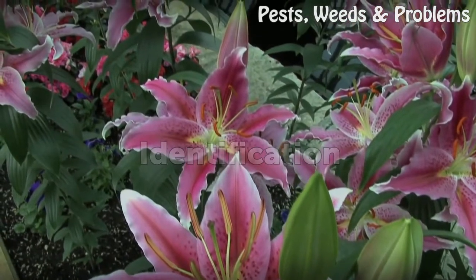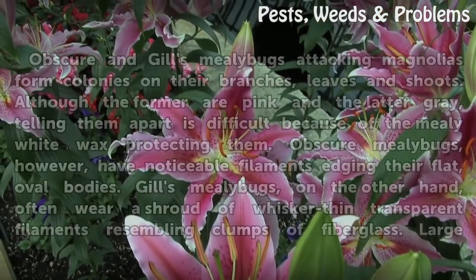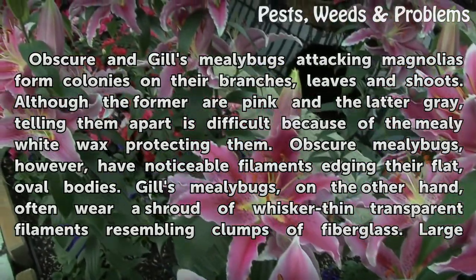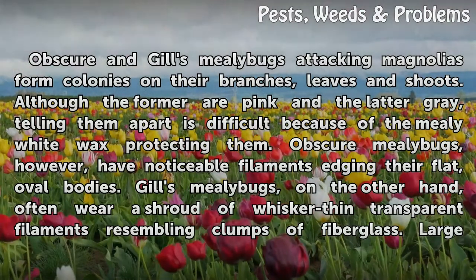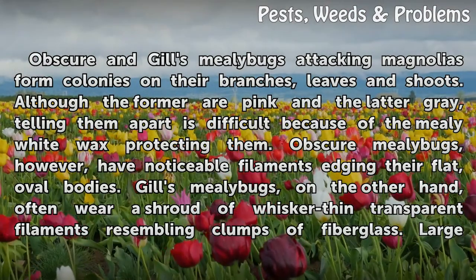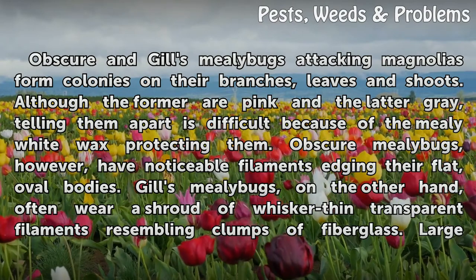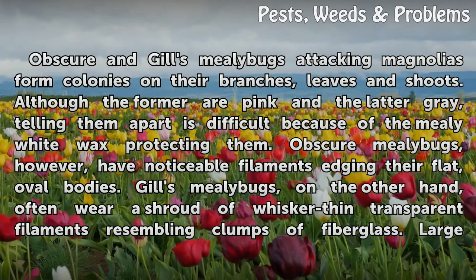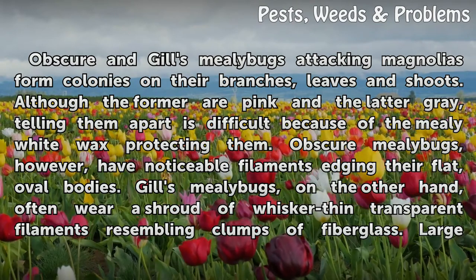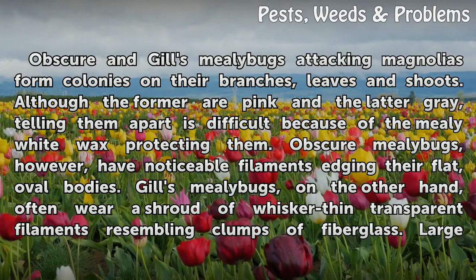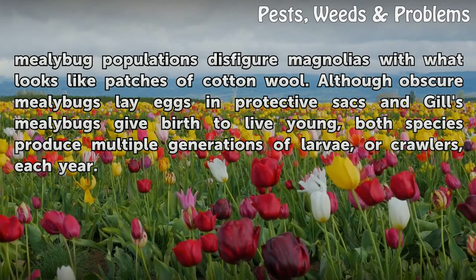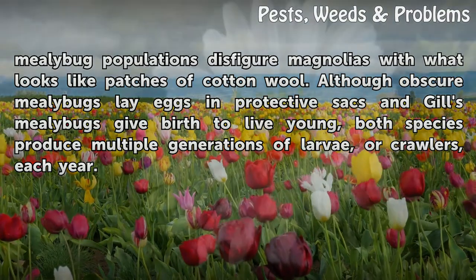Identification. Obscure and Gill's mealy bugs attacking magnolias form colonies on their branches, leaves and shoots. Although the former are pink and the latter gray, telling them apart is difficult because of the mealy white wax protecting them. Obscure mealy bugs, however, have noticeable filaments edging their flat, oval bodies. Gill's mealy bugs, on the other hand, often wear a shroud of whisker-thin transparent filaments resembling clumps of fiberglass. Large mealy bug populations disfigure magnolias with what looks like patches of cotton wool.